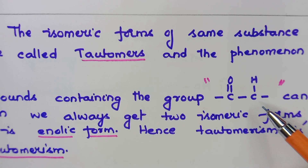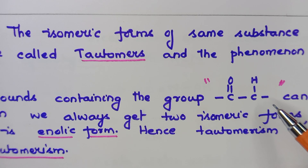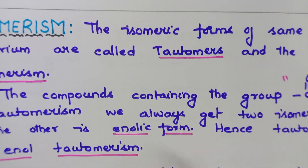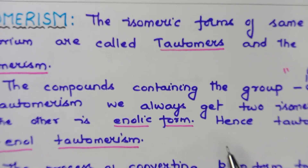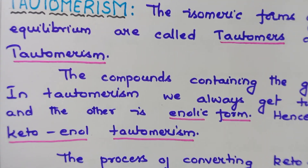In tautomerism we always find two isomeric forms of the same substance existing in equilibrium. One is the keto form and the other is the enolic form. Please copy this into your notebook — underline 'keto form' and 'enolic form' — these are the two general isomeric forms found under this phenomenon.